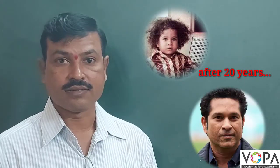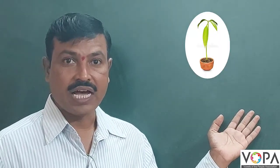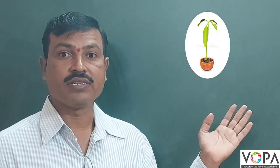In picture B, we can see a child. What will happen after 10 years? The child will become an adult and it grows. And in picture C, we can see a plant, and after 5 years there will be a big mango tree from this plant.